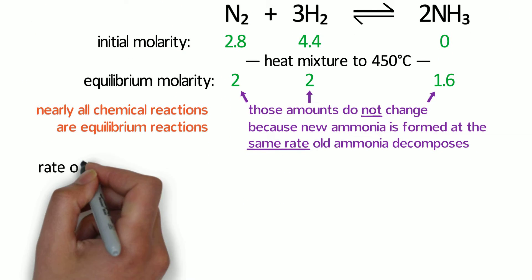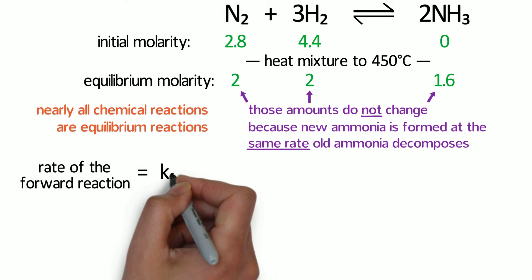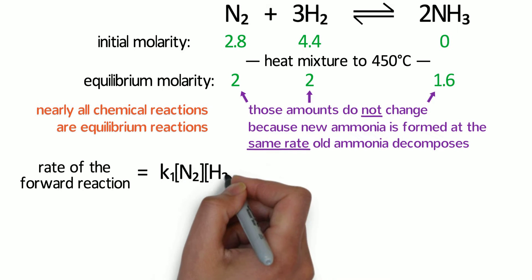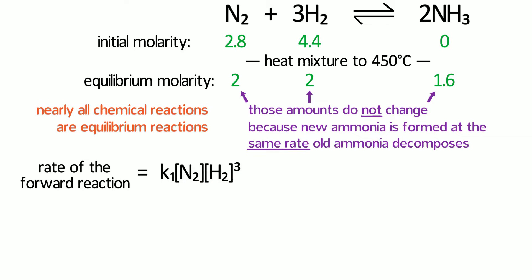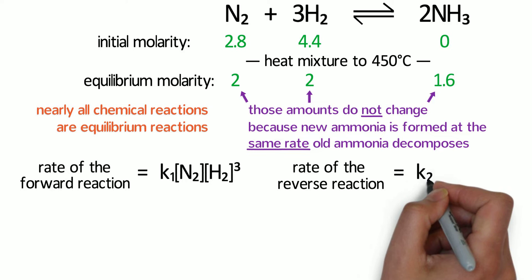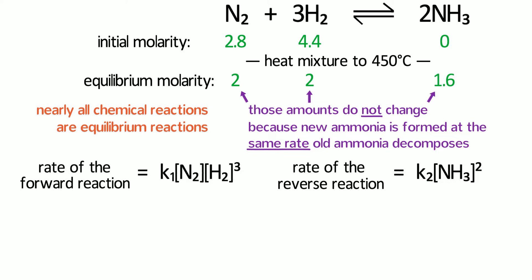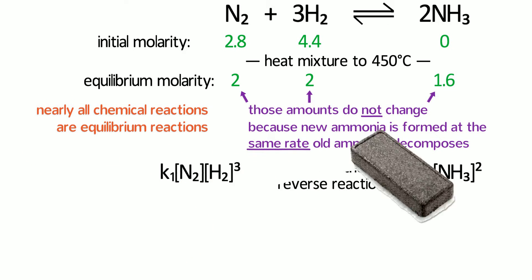For the Haber process, the rate of the forward reaction is a rate constant times the molarity of nitrogen times the molarity of hydrogen raised to the third power. Remember that a rate law is typically just a constant times the reactants raised to the power of their coefficients. Likewise, the rate of the reverse reaction is another rate constant times the molarity of ammonia squared. Remember that at equilibrium, the forward and reverse reactions occur at the same rate, so these two expressions are equal.